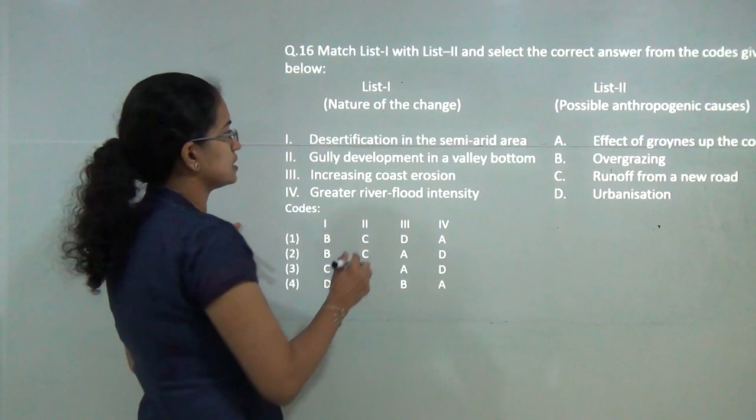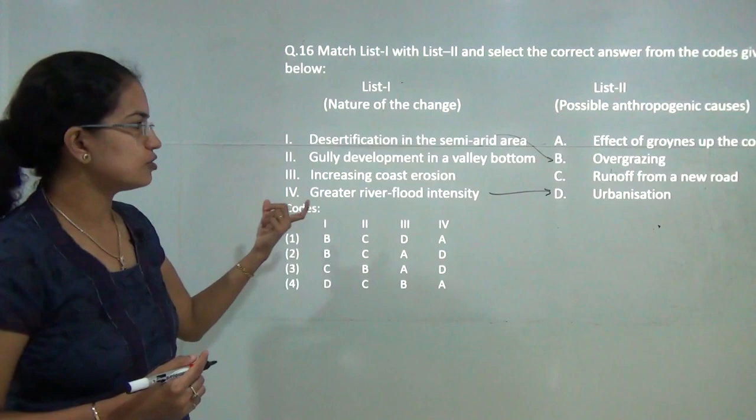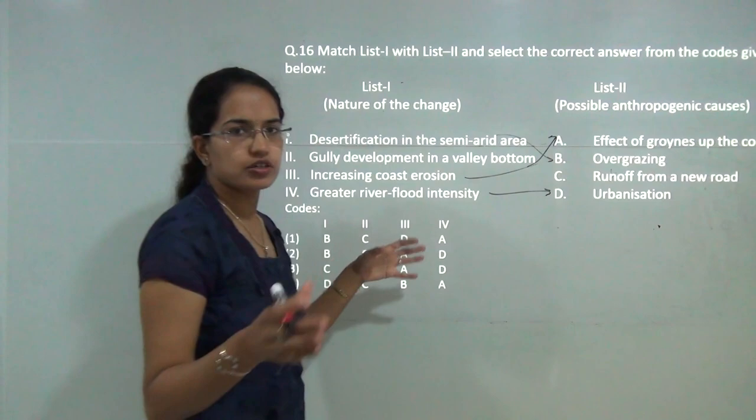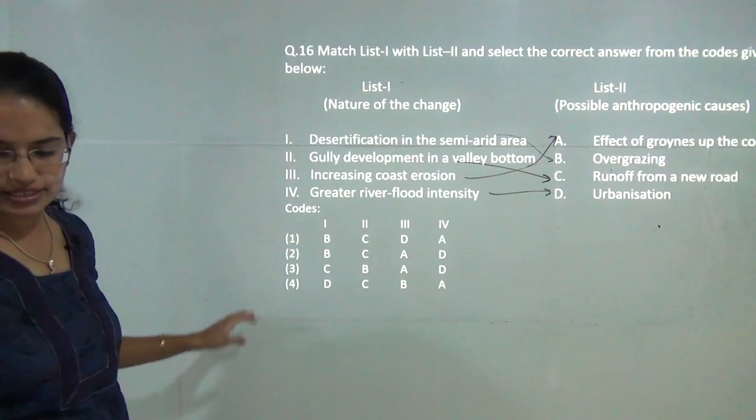Next question is desertification in semi-arid areas is owed to the overgrazing activity. Greater river flood intensity is seen in urban areas. You have increasing coastal erosion problems which are seen as an effect of groins up on the coast. Building near the coastline would be an example of this and runoff from a new road would be an example of gully development in a valley bottom area. These are the correct matches.